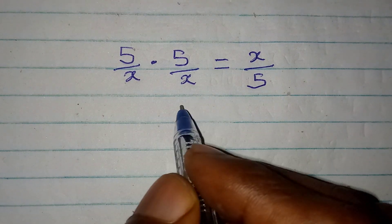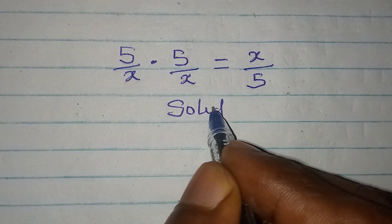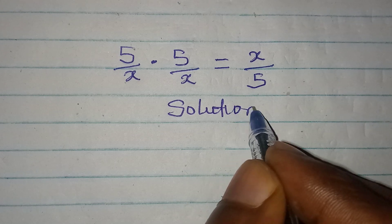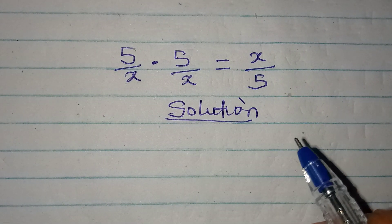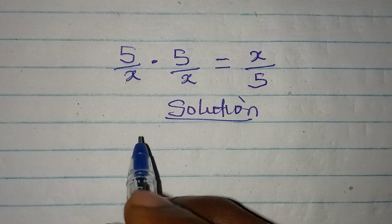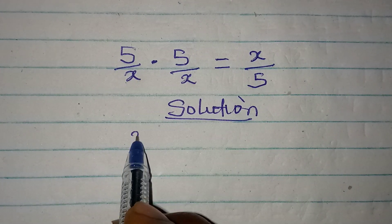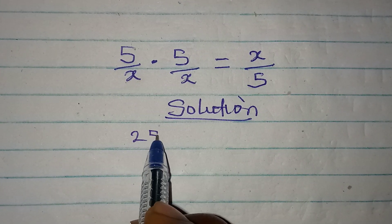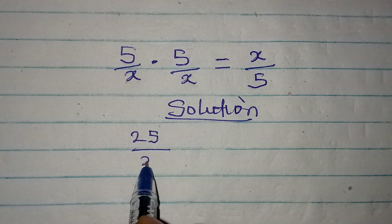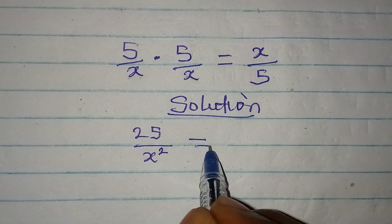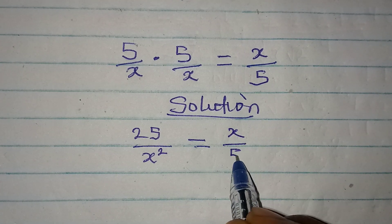Hello everyone, let's provide the solution to this problem. The first thing is 5 times 5 giving us 25, then x times x giving us x squared, and this is equal to x over 5.